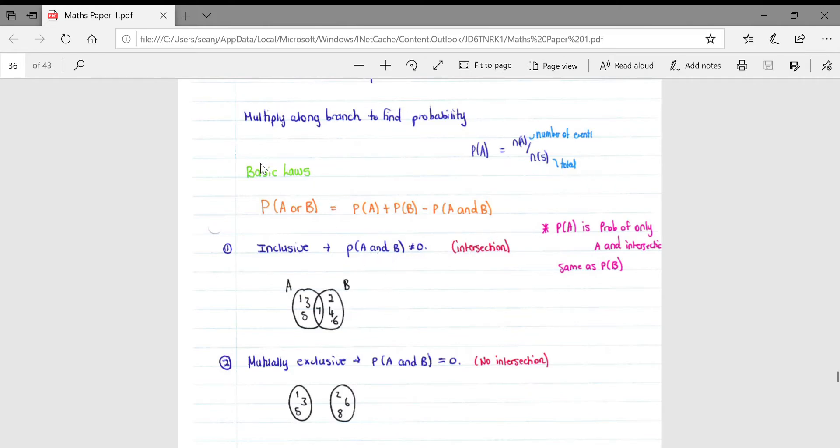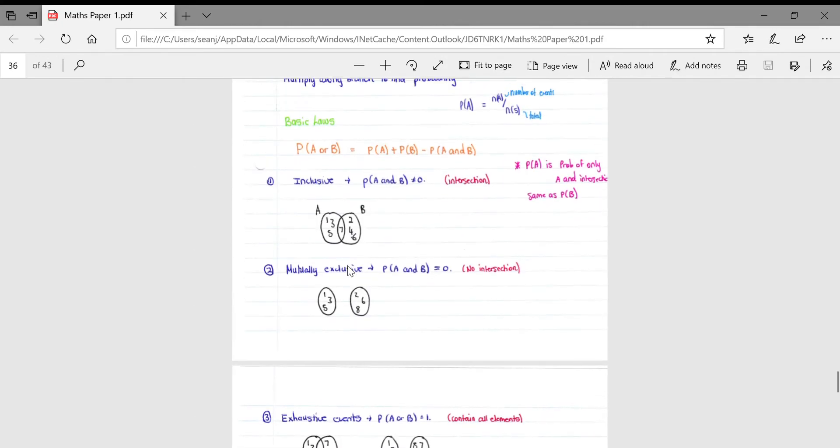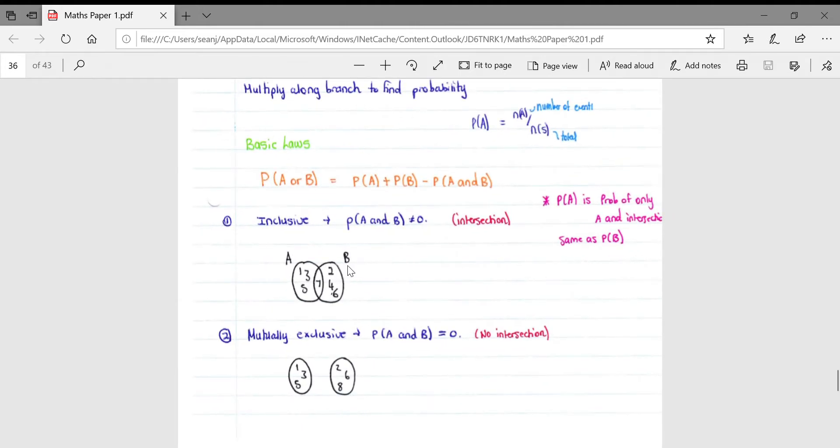When looking at the laws, there are six main laws that we will be looking at. First of all, inclusive events: this is where the probability of A and B does not equal zero, so basically on your Venn diagram there is an intersection. As you can see here, there's an intersection between event A and event B; seven is in the intersection.